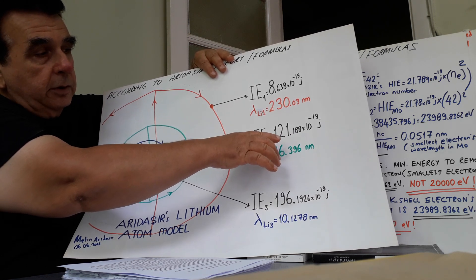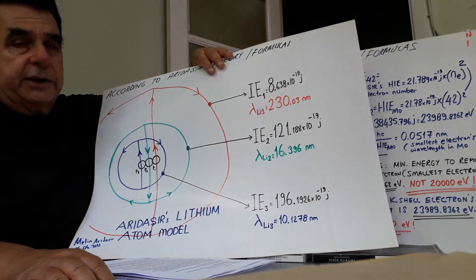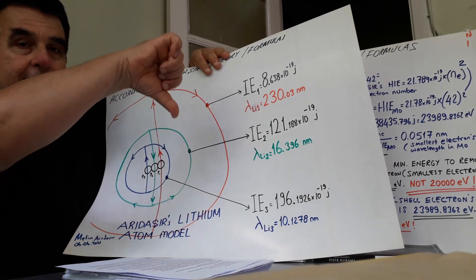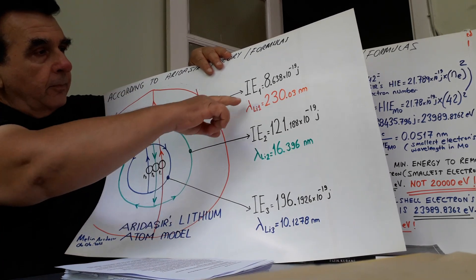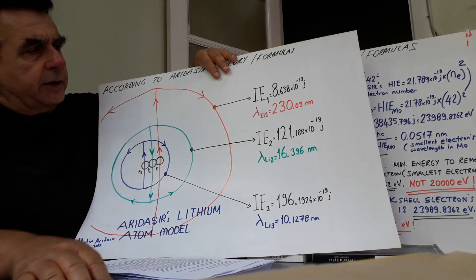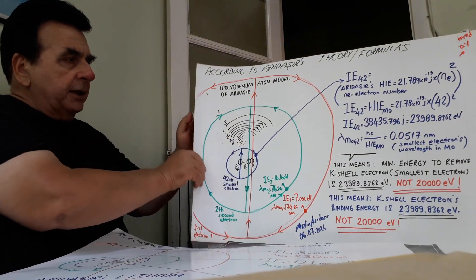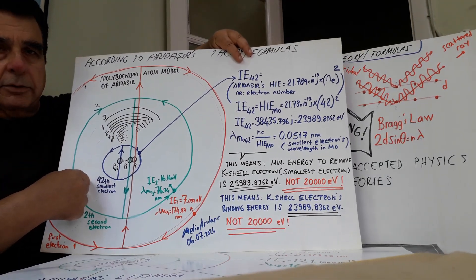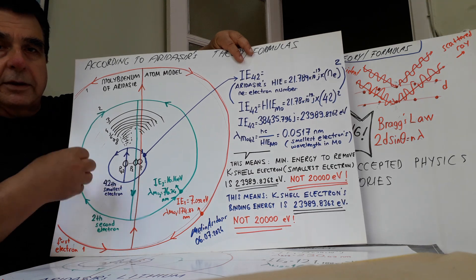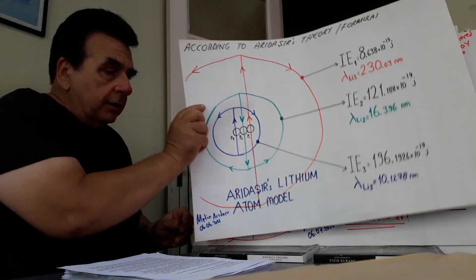As the number of shells increases, the shell electron energy drops. The ionization energy is 8.63 × 10⁻¹⁹ joules. The corresponding wavelength is 330.03 nanometers. According to me, the molybdenum atom has 42 intertwined electron motion forms, each one with a different ionization energy and different wavelength.